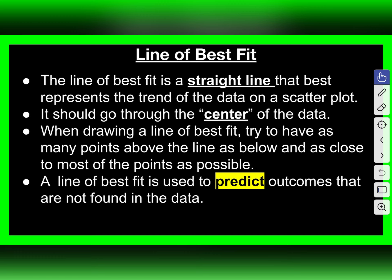The Line of Best Fit is a straight line that represents the trend of the data on a scatter plot. So it's basically like we have a whole bunch of scatter points and we have a straight line going through that data, and it should go through the center of the data.